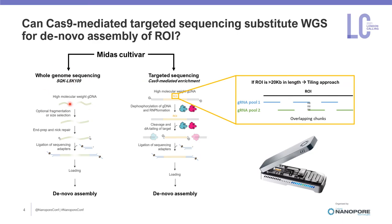On the left, we went for canonical nanopore whole genome sequencing and then assembled a new reference genome. On the right, we excised the region of interest with Cas9, sequenced with nanopores, and then performed the novel assembly only on the region of interest.